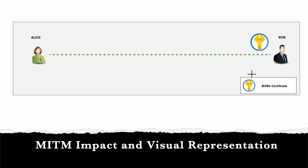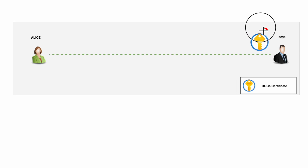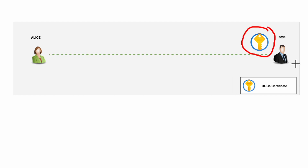Similarly, if Alice has to send a message to Bob, she gets Bob's public key, encrypts the message with it, and sends it to Bob. Bob decrypts it using his private key, which is private to him and not distributed publicly. This is how they are able to securely communicate with each other.